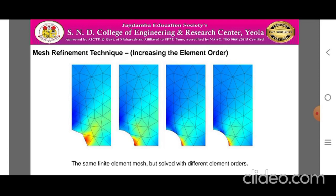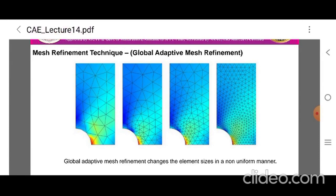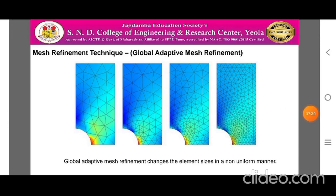The global adaptive mesh refinement technique uses an error estimation strategy to determine the point in the modeling domain where the local error is largest. The finite element analysis software then uses this error estimation to generate an entirely new mesh, with smaller elements in regions where the local error is significant. The advantage is that the software does all the mesh refinement. The drawback is that the user has no control over the mesh, and excessive mesh refinement may occur in regions of less interest where a larger local error is acceptable.